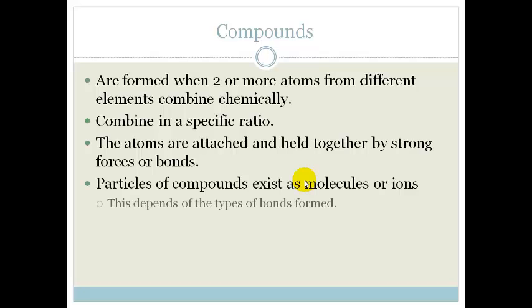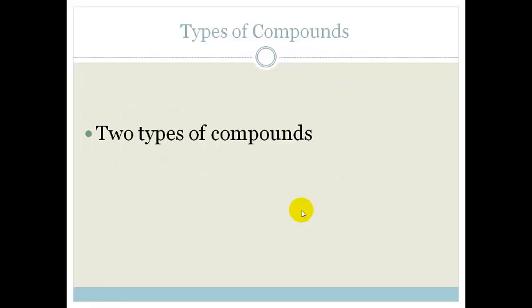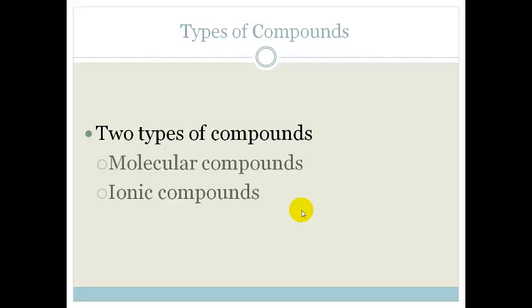The particles of compounds exist either as molecules or ions. This depends on the type of bonds formed. There are two types of compounds: molecular compounds and ionic compounds. Let's look at these.